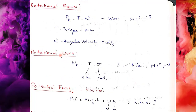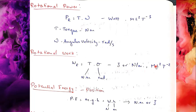For rotational work, force into distance becomes torque. Torque into angle of twist — theta. So torque has units of newton⋅meter, and theta is in radians. Combining gives newton⋅meter per second. The dimensional formula for rotational work is ML²T⁻².